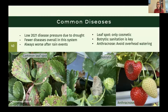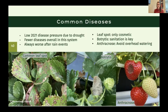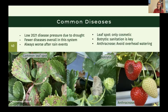Disease pressure was pretty low in 2021 due to the drought, and this system inherently has fewer diseases, though it's always worse after rain events. Common leaf spot appears frequently — visible as spots on leaves — but is only cosmetic. Botrytis, or gray mold, is managed primarily through sanitation and removing dead and dying material. Anthracnose is becoming more of a problem for northern growers — it causes brown dead spots — so avoid overhead watering and remove infected tissue to prevent spread.